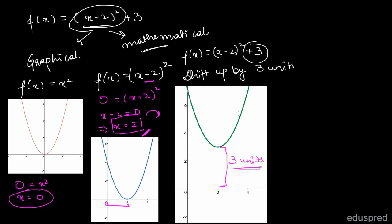To find the range from the graph, there is no y value below 3, so the minimum y value is 3 and it is included. As the input increases, the output also increases toward infinity. Since the domain can be any real number, for example 10 lakhs, the output would be (10 lakhs minus 2) squared plus 3, which is a huge number. As x increases toward infinity, f(x) also increases without bound. So the range is from 3 to infinity.